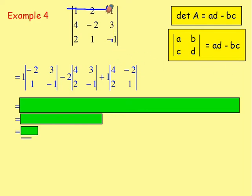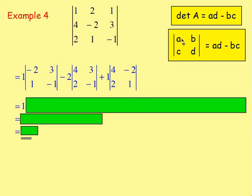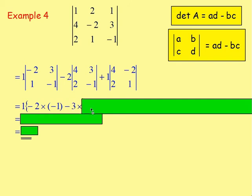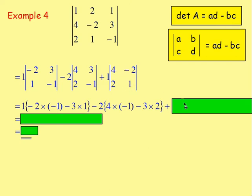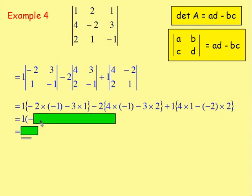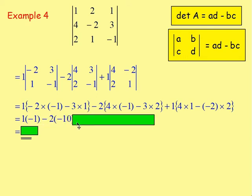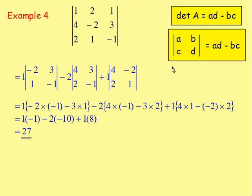Working out the determinants of those 2x2 matrices using AD minus BC: 1 times (negative 2 times negative 1 take away 3 times 1), take away 2 times (4 times negative 1 take away 3 times 2), plus 1 times (4 times 1 take away negative 2 times 2). This simplifies to 1 times negative 1, take away 2 times negative 10, plus 1 times 8, which gives 27. So 27 is the determinant of this 3x3 matrix.